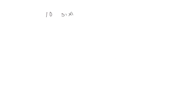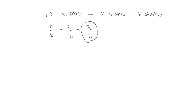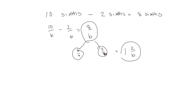Let's look at a different one. In unit form: 10 sixths take away 2 sixths equals 8 sixths. As a number sentence: 10 sixths take away 2 sixths equals 8 sixths. Looking at the difference, we see our numerator is greater than our denominator, which tells us this number is greater than 1. So we can decompose it into the whole number part and the fractional part, and rewrite it as 1 and 2 sixths. We call this a mixed number — mixed meaning it has whole numbers and fractional parts.